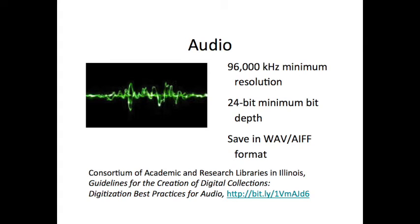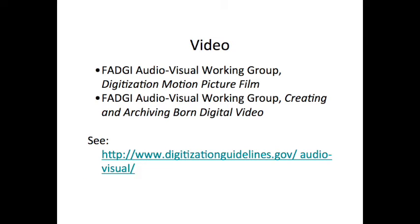For audio, pay attention to sampling rate and bit depth for digitization, and save in either WAVE or AIFF format. An excellent resource is the CARLI document called Guidelines for the Creation of Digital Collections: Digitization Best Practices for Audio. For video, two FADGI documents work in tandem from their audio-visual working group: the digitization of motion picture film and creating and archiving born-digital video. All FADGI AV guidelines can be found at the address shown on screen.